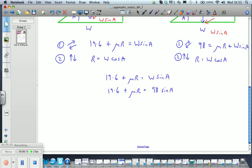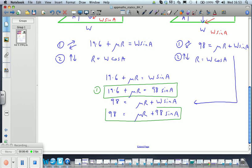And we also have 98 = μR + W sin A, or substituting, that's 98 = μR + 98 sin A. So we have two equations here, one and two. We notice that μR is on the right-hand side for equation one and on the left-hand side for equation two, so if we add these...